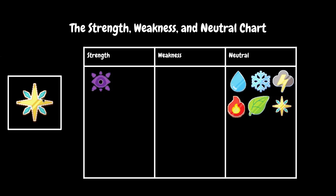This is our first example — we have Astral. Its Strengths are Shadow, which means it's powerful against Shadow. It has no weaknesses, and it's neutral against water, ice, storm, fire, plant, and itself. Most elements are weak against themselves, but Astral is different.